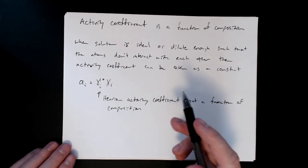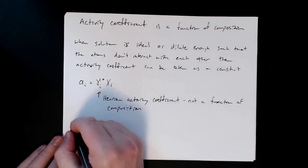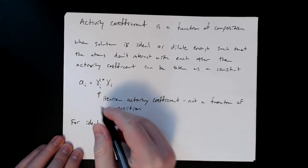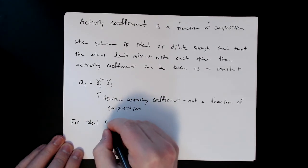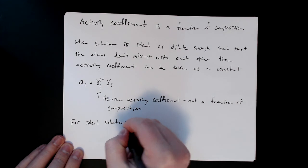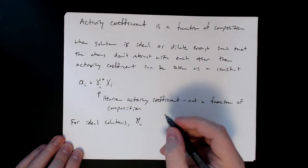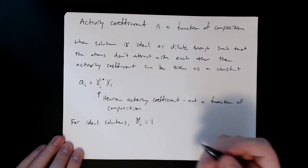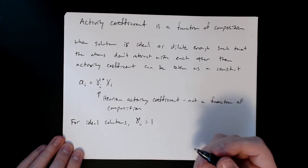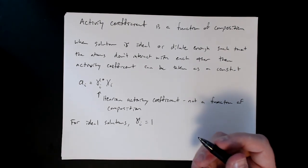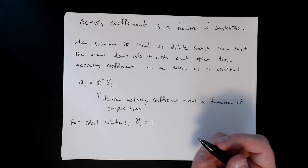To formalize it: for ideal solutions, the activity coefficient γ_i equals one, which means the activity equals the mole fraction: a_i = x_i.